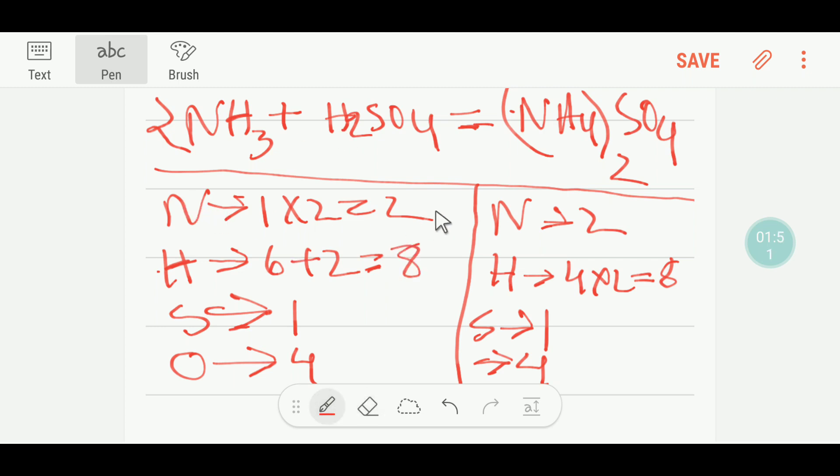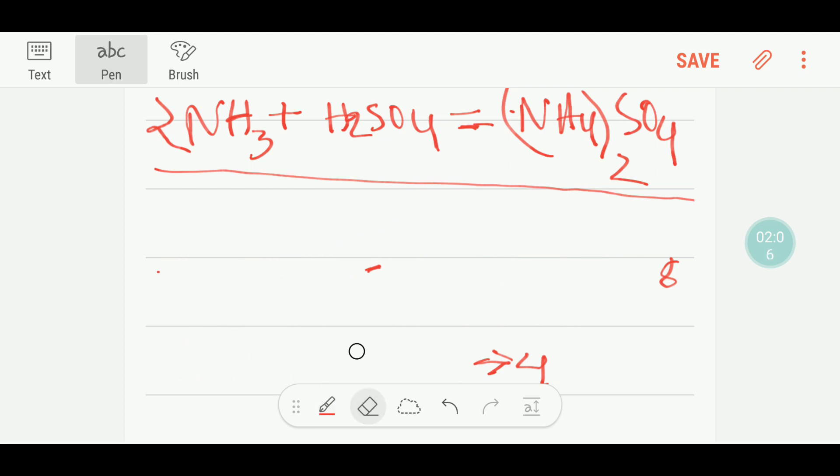Nitrogen is balanced, hydrogen is balanced, sulfur is balanced, oxygen is balanced. So this is the balanced equation. Now I'll show you the second way to balance this reaction, and this second way will be very helpful in your exam hall to balance this reaction.